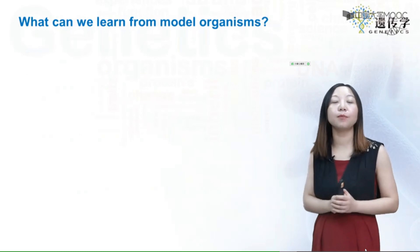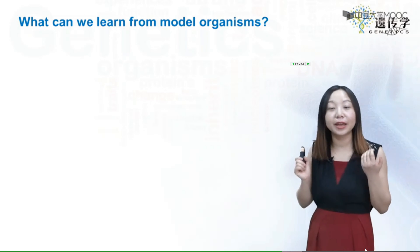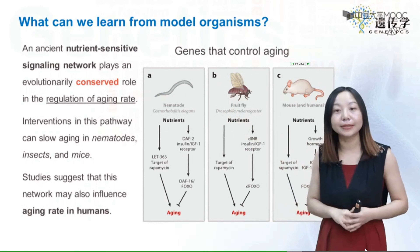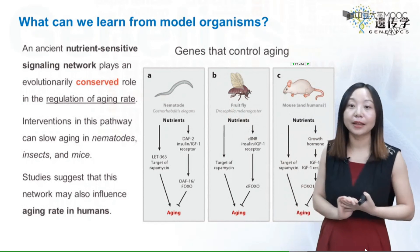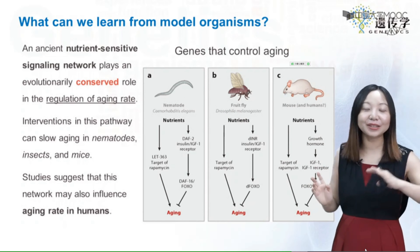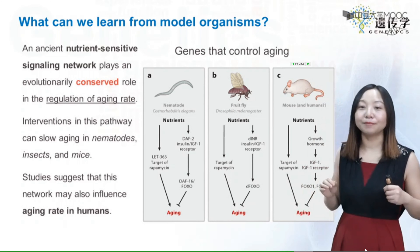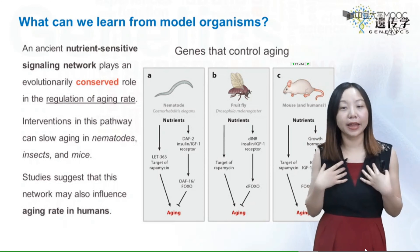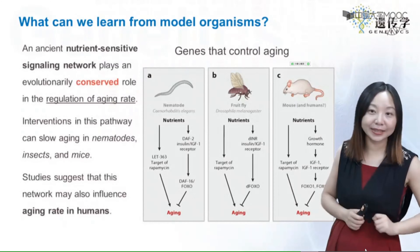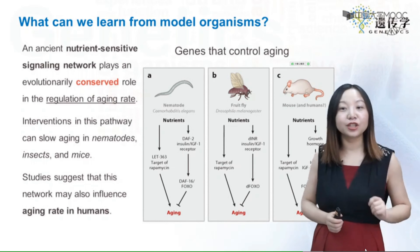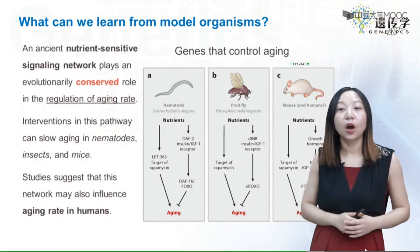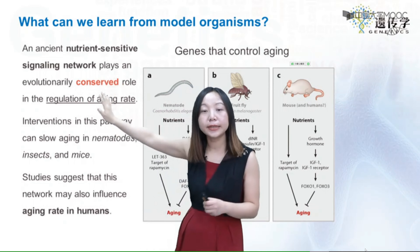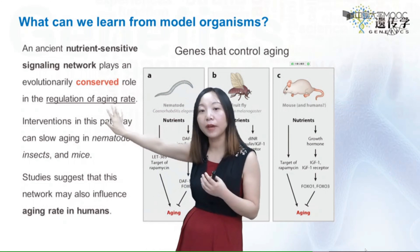Here's an example of what we can learn from model organisms. The study I want to show is of genes that control aging. The quest for longevity has a very long history across many societies. For a geneticist, the question becomes: are there genes that control aging? The answer is yes. One key pathway is the nutrient-sensitive signaling network, which controls the rate of aging in many different species.